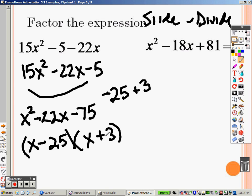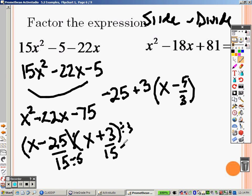So because I slide by 15, I need to divide these by 15. And I realize that I can take a 5 out of both the top and the bottom of those. So it gives me x minus 5 over 3. And I divide both of those by 3. So I end up getting x plus 1 over 5.